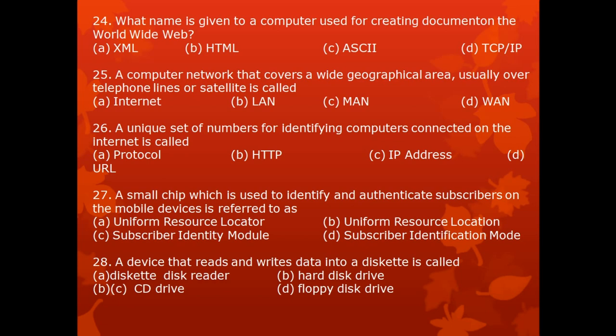Question 25. A computer network that covers a wide geographical area, usually over telephone line or satellite, is called: A. Internet, B. LAN — Local Area Network, C. MAN — Metropolitan Area Network, D. WAN — Wide Area Network.